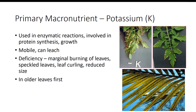Potassium is used in many enzymatic reactions in the plant and is involved in protein synthesis and growth in meristematic tissues. Potassium is very mobile and thus is subject to leaching in sandy soils. Unlike nitrogen and phosphorus, which are used to produce compounds for plant growth, potassium is found in plant tissues in soluble inorganic salts. Potassium deficient plants have marginal burning of leaves, speckled leaves, and leaf curling, thereby reducing their size. Potassium deficiency typically occurs on older leaves and progresses to the younger leaves. When plants are deficient in potassium, an accumulation of high levels of water-soluble nitrogen is found in the leaves, which may be responsible for the observed necrosis.